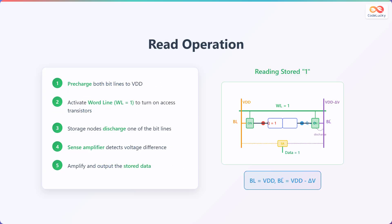Let's walk through the read operation. First, both bit lines are pre-charged to VDD. Then, the word line is activated, setting it to 1, which turns on the access transistors. The storage nodes then discharge one of the bit lines. A sense amplifier detects the voltage difference between the bit lines, and finally, the stored data is amplified and output. In this example, we are reading a stored 1. The bit line is at VDD, while the bit line bar is at VDD minus delta V.